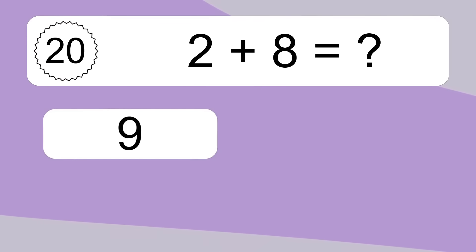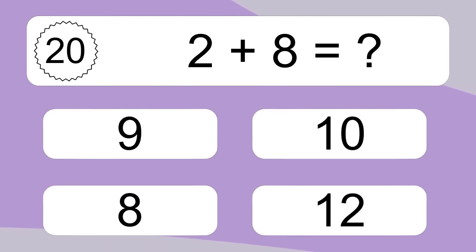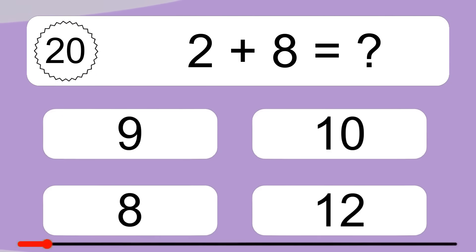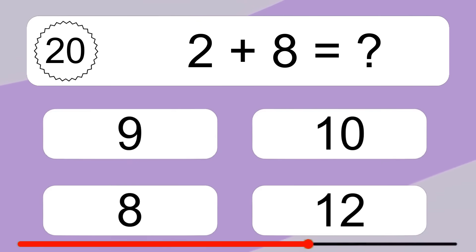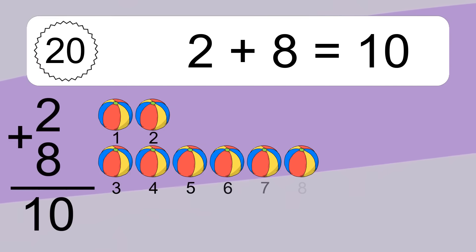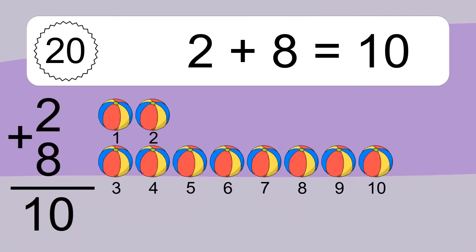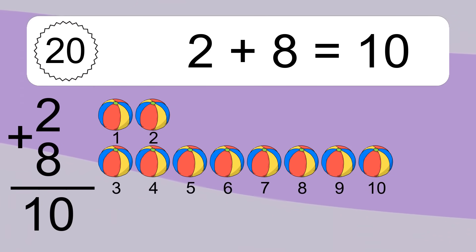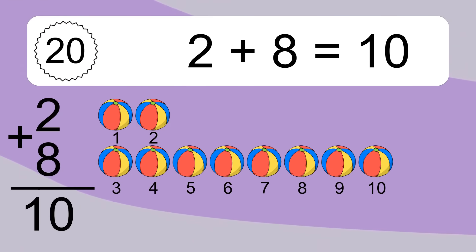2 plus 8 equals what? 2 plus 8 equals 10. Let's count it: 1, 2, 3, 4, 5, 6, 7, 8, 9, 10.